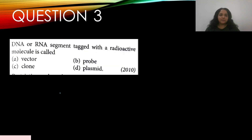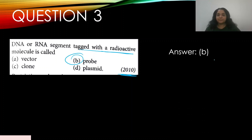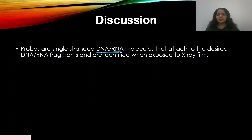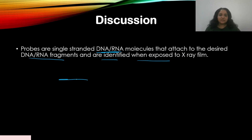Question 3: A DNA or RNA segment tagged with a radioactive molecule is called — this appeared in 2012. Options: A — vector, B — probe, C — clone, D — plasmid. The answer is B — probe. Probes are single-stranded RNA or DNA molecules attached to desired DNA or RNA fragments, identified when exposed to X-ray film. They are radioactively labeled.